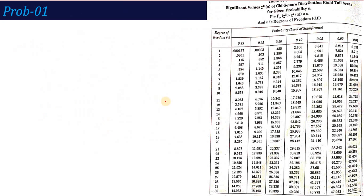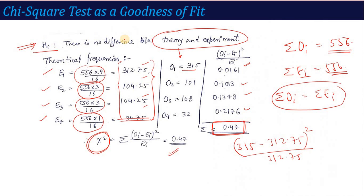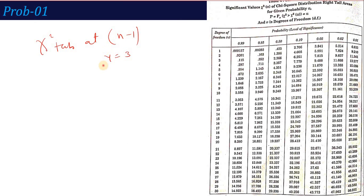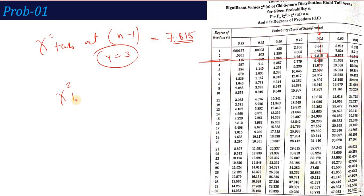Now calculate the tabulated Chi-Square from the table. Degree of freedom = n minus 1. Here n = 4, so degree of freedom = 3. At the default 5% significance level (0.05), the tabulated value is 7.815. The calculated value is 0.47. Since Chi-Square calculated (0.47) is less than Chi-Square tabulated (7.815), H0 is accepted — meaning there is no difference between theory and observation.